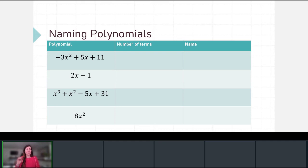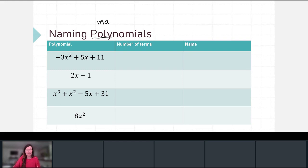Now let's name polynomials. I have the same three polynomials we just looked at, plus a fourth one. To name a polynomial, we can look at the degree and the number of terms. The term 'polynomial' — 'poly' means many, and 'nomial' relates to name or terms — so a polynomial has some finite number of terms, but we can classify them more specifically.